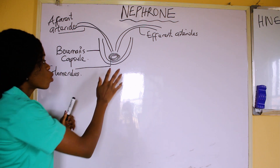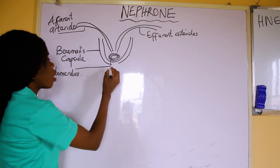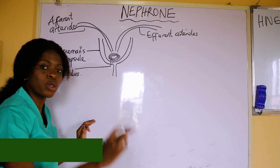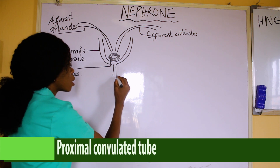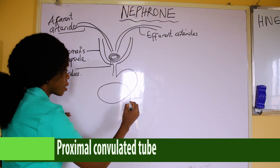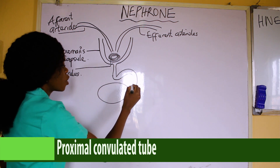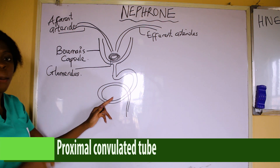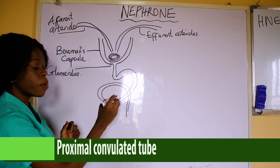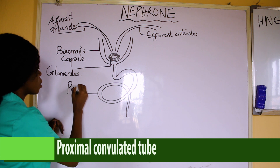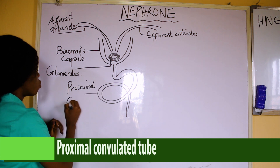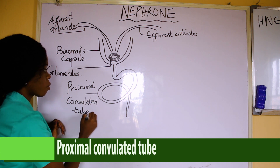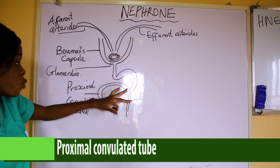There's a tube coming down from the Bowman's capsule. I'll create an opening and bring it down. The first tube is known as the Proximal Convoluted Tube — it's twisted. So I'll draw something that is twisted, and label it the Proximal Convoluted Tube.